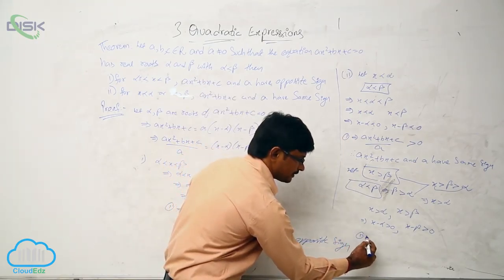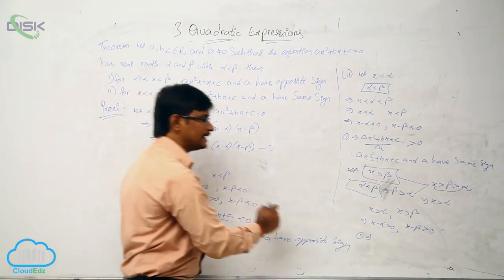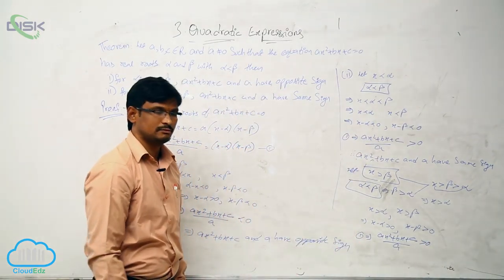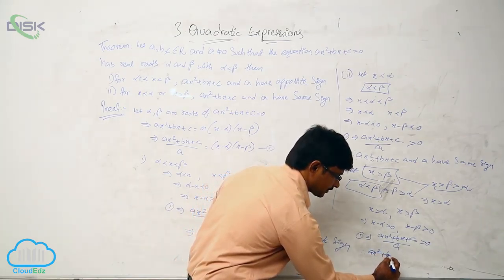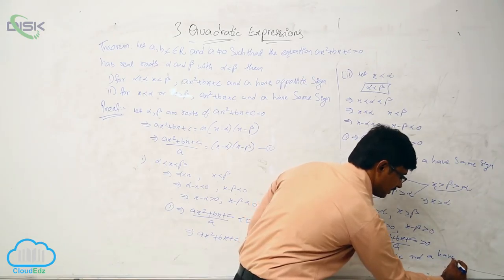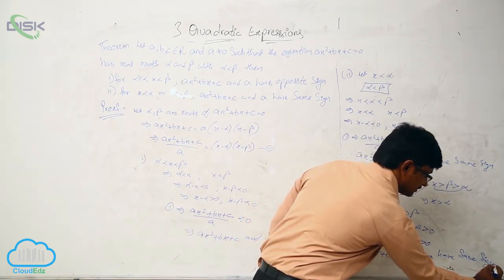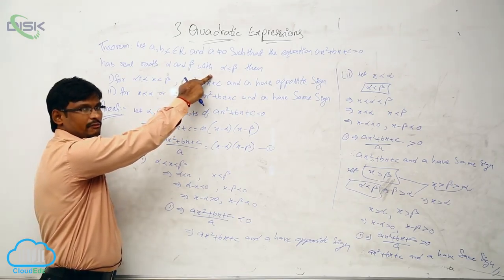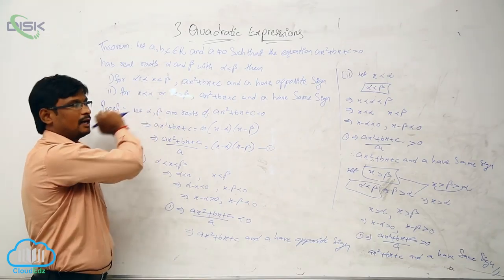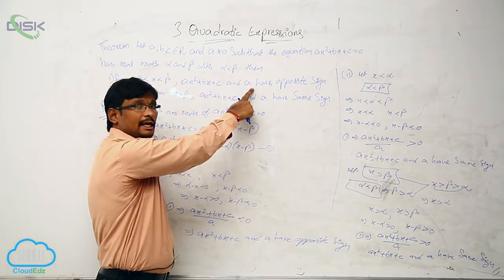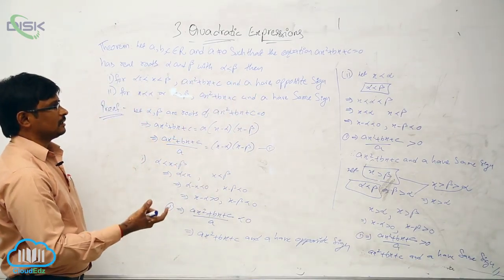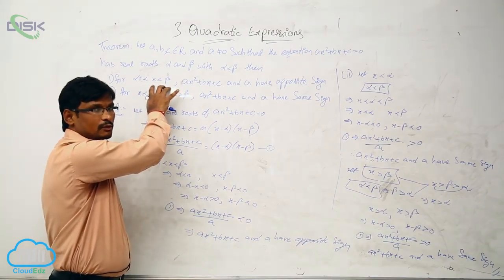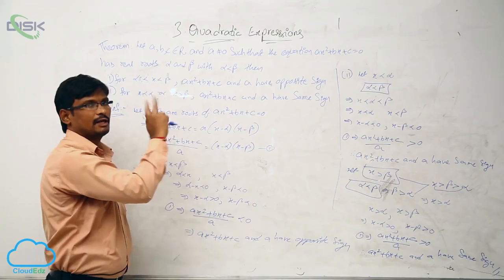By equation one, (ax² + bx + c)/a = (x − α)(x − β) is clearly greater than 0. When both factors are positive, the product is positive, meaning ax² + bx + c and a have the same sign. This completes the proof of the theorem. In problems, they will ask for the sign of the quadratic expression and the relation between the roots, and applying these conditions gives the required answer.